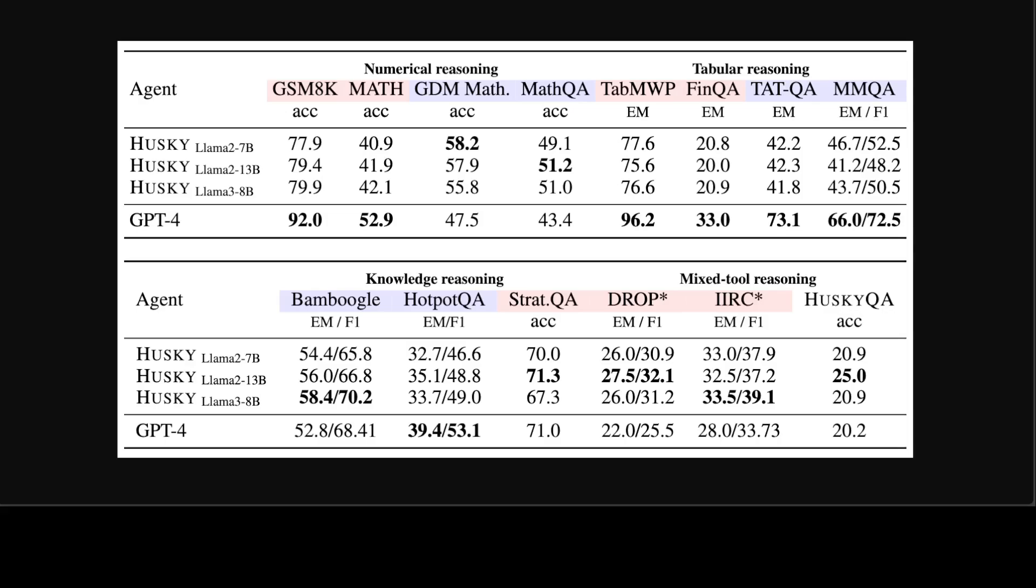They have done it across the same set of evaluation, and Husky has outperformed GPT-4 Turbo on out-of-domain math evaluation tasks, which include Google DeepMind MATH, MathQA, and also mixed reasoning tasks which include StickyQA and DoubleIRC.